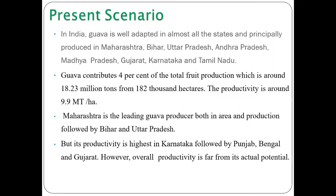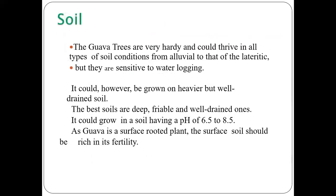In India, guava is produced in states like Maharashtra, Bihar, Uttar Pradesh, Andhra Pradesh, Madhya Pradesh, Karnataka, and Tamil Nadu. Maharashtra is the leading producer in area and production, followed by Bihar and Uttar Pradesh. Productivity is highest in Karnataka, followed by Punjab, Bengal, and Gujarat. Guava contributes four percent of total fruit production in India, with annual production of 18.23 million tons from 182,000 hectares and productivity of 9.9 tons per hectare.